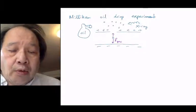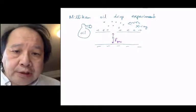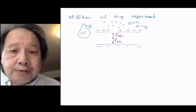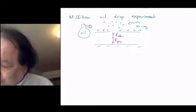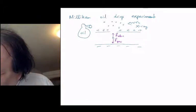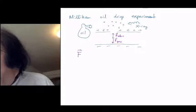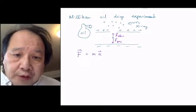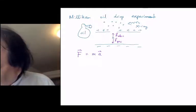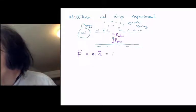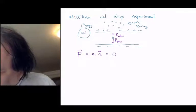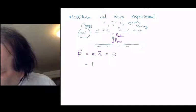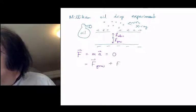What Millikan did was he adjusted it so that the oil drops stopped moving. The sum of forces, F equals mass times acceleration - if they've stopped moving, it means that the acceleration is zero, and that means the sum of forces is zero. The sum of the forces is the gravitational force plus the electrostatic force.